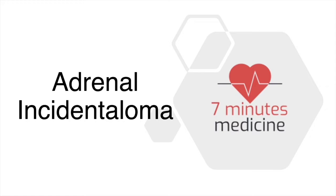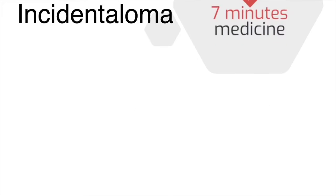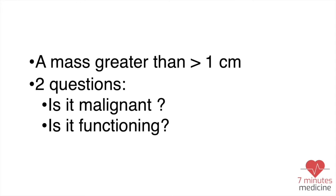Welcome to another episode of 7 Minutes Medicine. Today we'll talk about adrenal incidentaloma. An incidentaloma is a mass more than one centimeter in size, and the two most important questions you have to ask yourself when you see this finding are: first, is it malignant, and second, is it functioning? You have to answer those two questions to decide what you should do next.